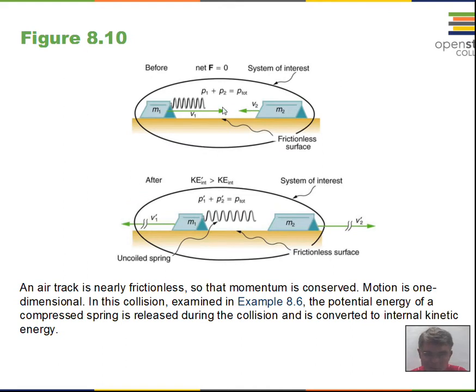Here's the example of the spring. And here, an object is approaching another object and then bouncing off on the air track. Again, we can say that there's no net external force, the friction is very little. Then they've had a compressed spring mounted to this mass before the collision, after the collision that spring is expanded and it's delivered kinetic energy to the system.